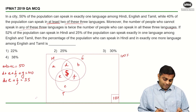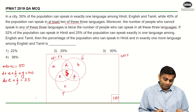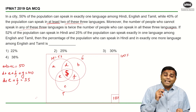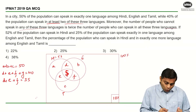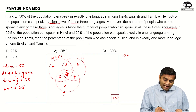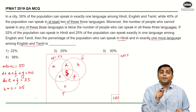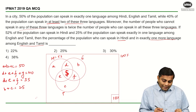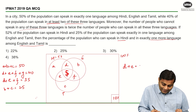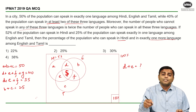Now, 52% of the population can speak Hindi, so the Hindi circle total is 52. Also, 25% of the population can speak exactly one language amongst English and Tamil, so B plus C equals 25. We are asked: what percentage of the population can speak Hindi and exactly one more language amongst English and Tamil? That means Hindi plus English, which is region D, or Hindi plus Tamil, which is region E. So we are asked for D plus E.